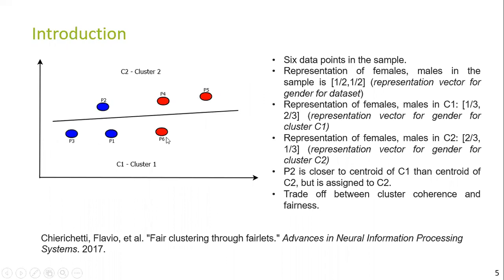P3, P1, and P6 are in one cluster; P2, P4, and P5 in another cluster. The gender representation vector for the whole dataset is (1/2, 1/2), where the first element is the fractional representation of females and the second is the fractional representation of males in the dataset. A similar vector for cluster C1 would be (1/3, 2/3) and for C2 it would be (2/3, 1/3). So this clustering is more fair with respect to gender distribution.